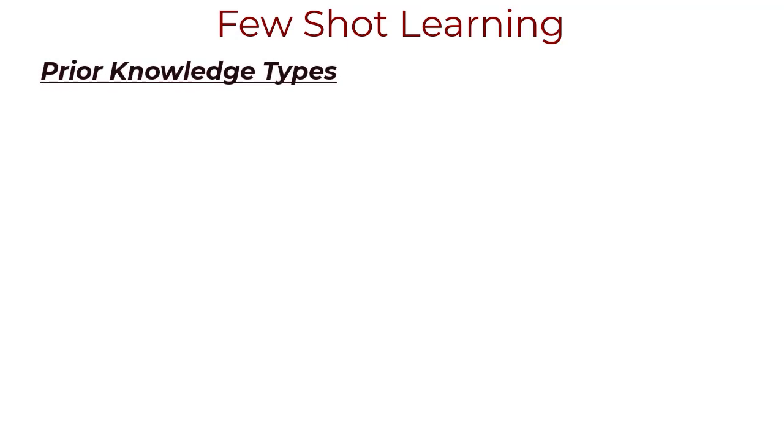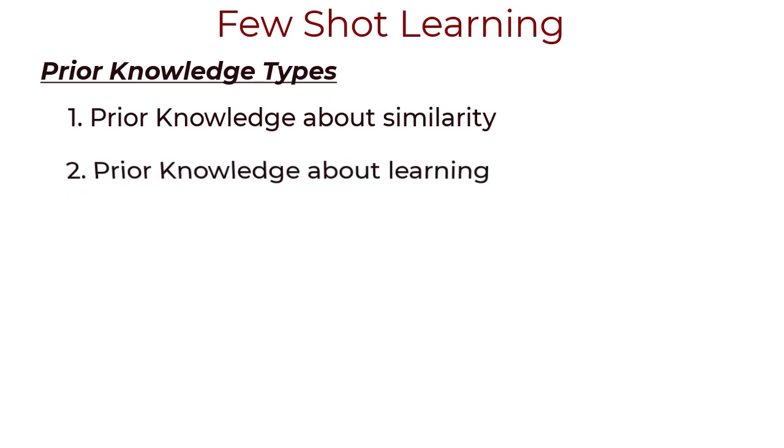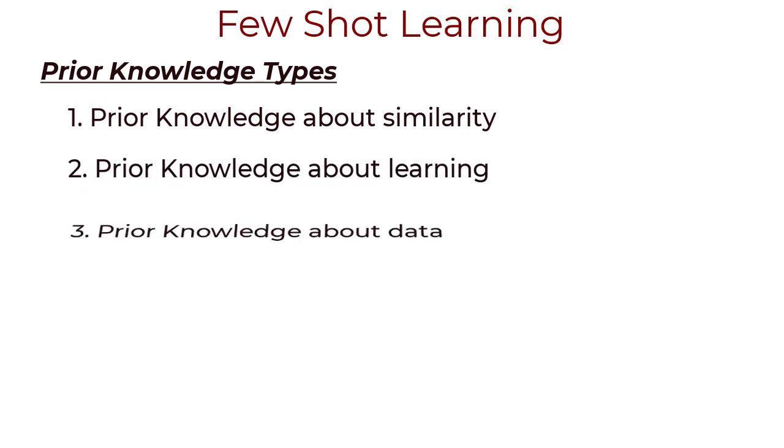Now, prior knowledge can come in many forms. But I'll stick to three types based on a blog post so that it's just consistent. Prior knowledge about similarity. Prior knowledge about learning. And prior knowledge about data. Humans are so knowledgeable that we can make use of all these three before presented with a new task. But in this video, we are going to shift focus only to the first. That is, prior knowledge based on similarity. And we can tackle the others maybe in a separate video.